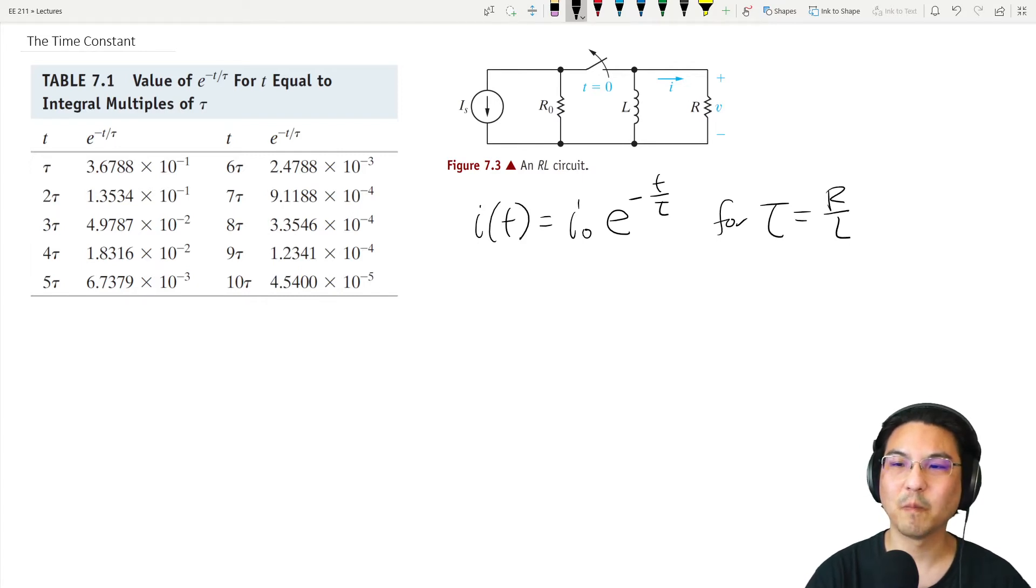So this is the time constant. If we graph the current as a function of time, before we open the switch the current through the inductor is constant—it's hogging all of it, these resistors don't get anything. When we open the switch, it's exponential decay like this.